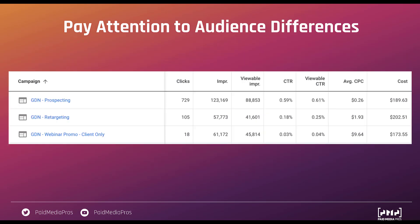I would say the same is true for your audiences. For search, everybody is actively searching for something, so whether they're new to you, a returning customer, or somebody who's still shopping, they're probably searching with almost the same intent. For display, it can be quite a bit different since this is a push strategy. You can see that for these campaigns, prospecting has the highest viewable click-through rate at 0.61, retargeting is at 0.25, and clients are way low at 0.04. So if we're trying to promote a webinar across all these different audiences, it makes sense to take into account that the click-through rate is very different and analyze ad messaging, format, and sizes differently based on each audience.